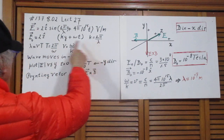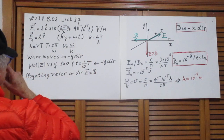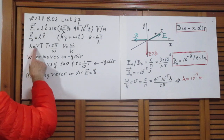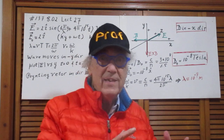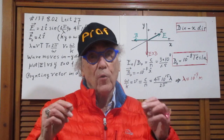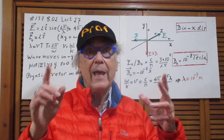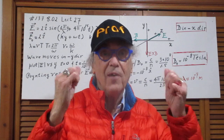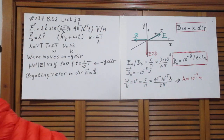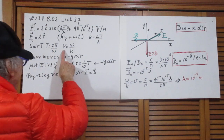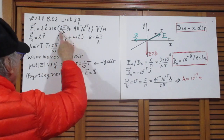Since lambda = v × T — the wave moves at speed v over one period T covering distance lambda — and T = 2π / omega, it follows that v = omega / k. That is why this form is so convenient.